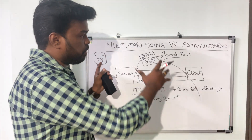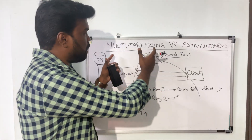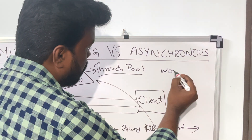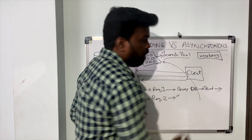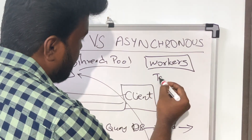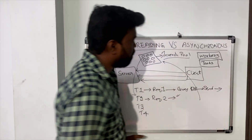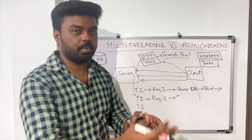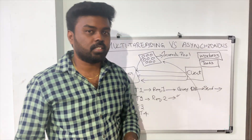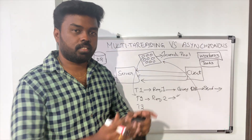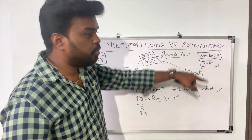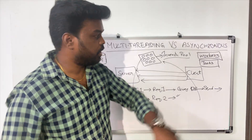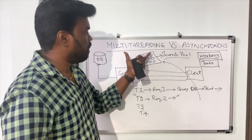If you closely observe both examples, in a nutshell: multi-threading is all about managing the workers — how you create worker threads, delegate tasks to them, and terminate them once the job is done. Asynchronous programming, on the other hand, is all about managing the tasks. It doesn't matter whether it's single-threaded or multi-threaded; it's about how you efficiently manage tasks so you don't wait for one task to complete before picking up the next. This is one of the major differences between multi-threading and asynchronous programming.